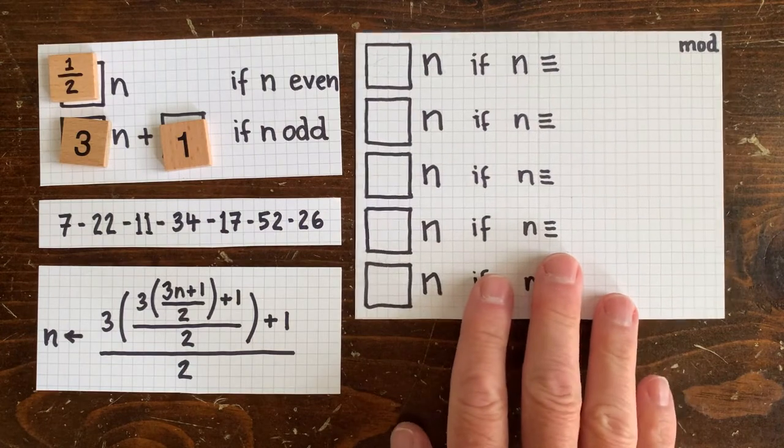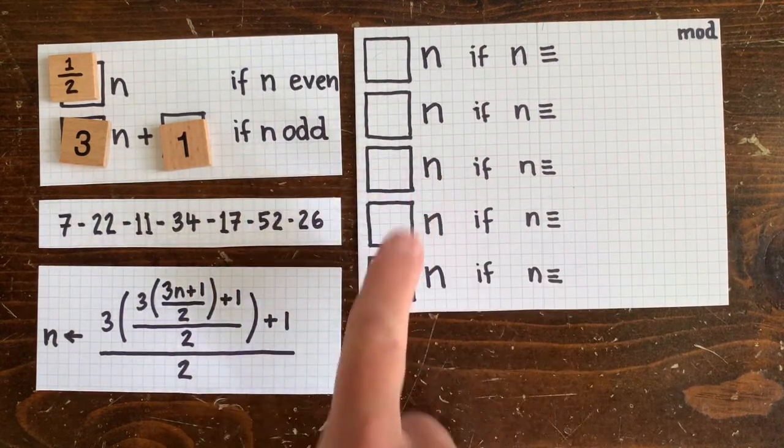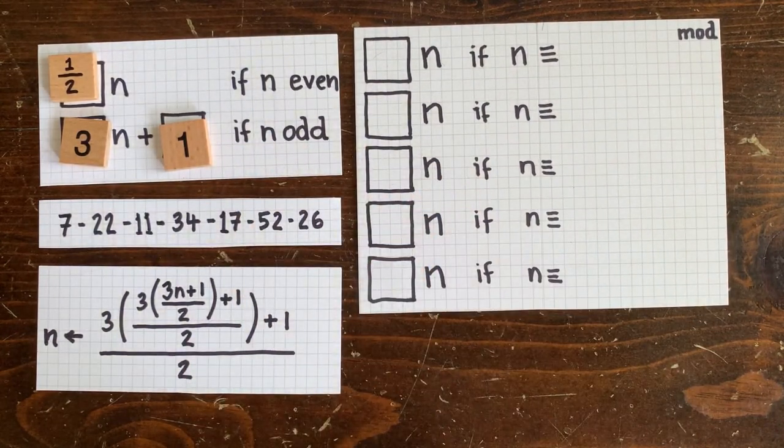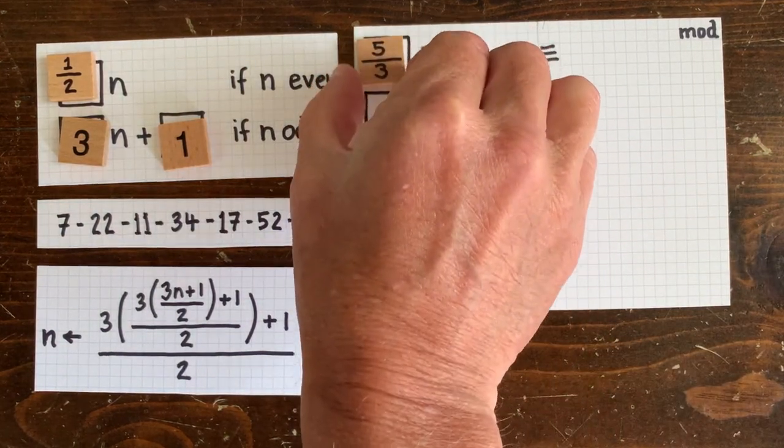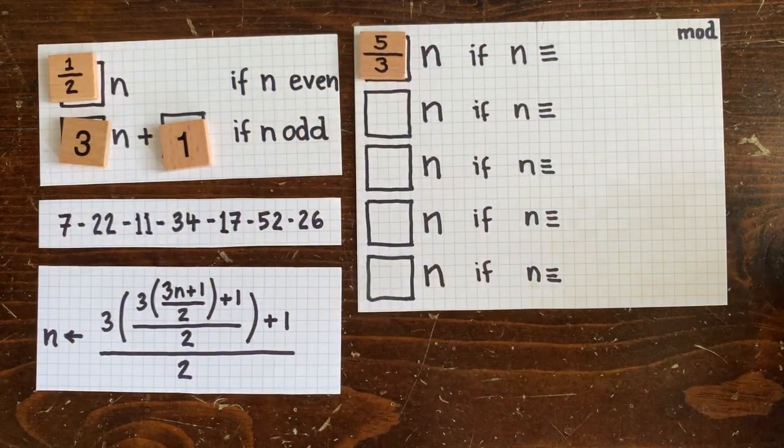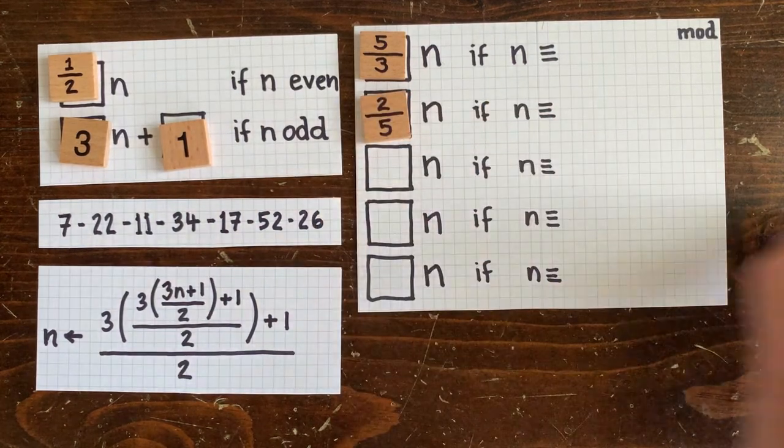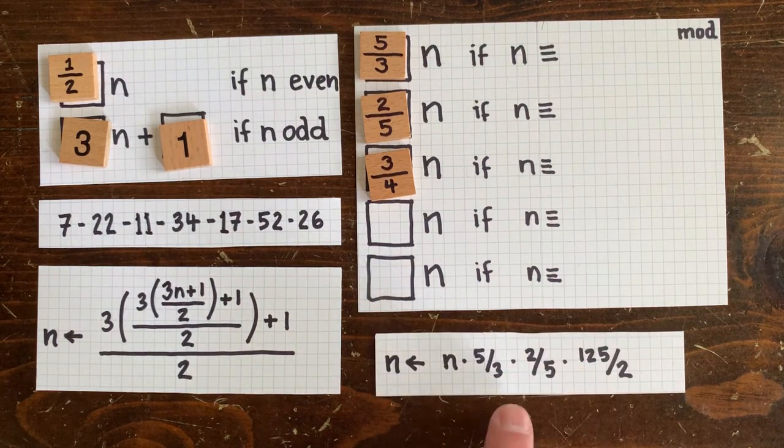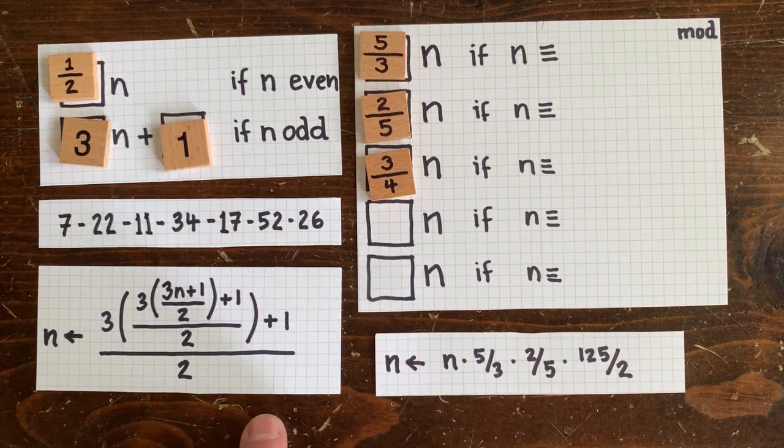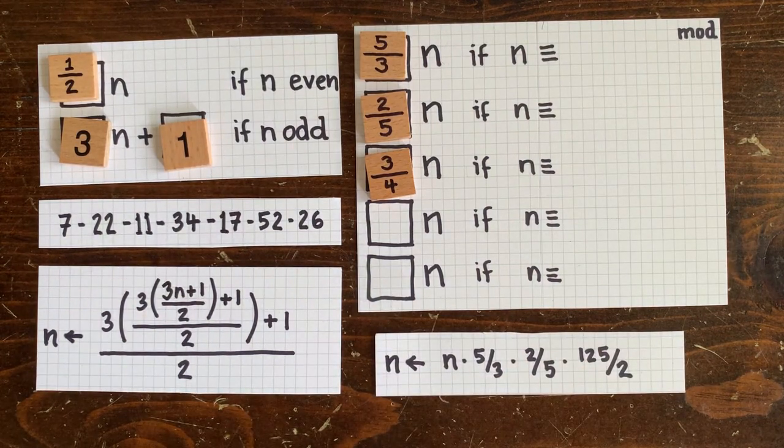What if we could make a rule that's equivalent to 3n plus 1, but uses only multiplication? For example, if n is such and such type number, multiply it by 5 thirds. Otherwise, multiply it by 2 fifths, or 3 quarters. Then n would get replaced by something like this, instead of this. And that might make our proofs easier.